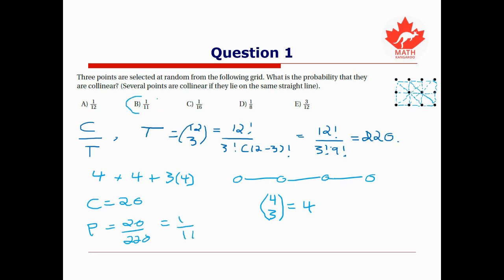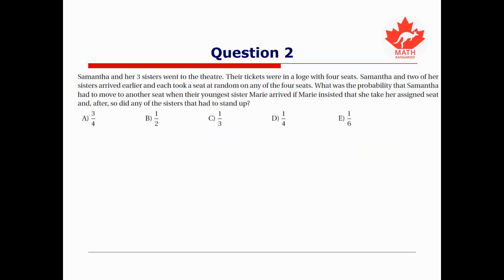For question two, we're told that Samantha and her three sisters went to the theater. Their tickets were all in a row with four seats. Samantha and two of her sisters arrived earlier and each took a seat at random on any of the four seats. What is the probability that Samantha had to move to another seat when their younger sister Mary arrived, if Mary insisted that she take her assigned seat and after so did any of the sisters that had to stand up? Again, like the last problem, I think it's easier to compute the total number of cases first.